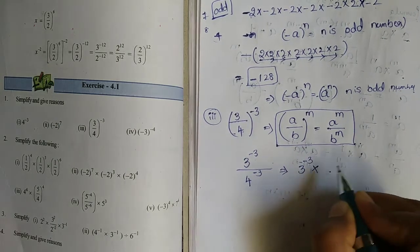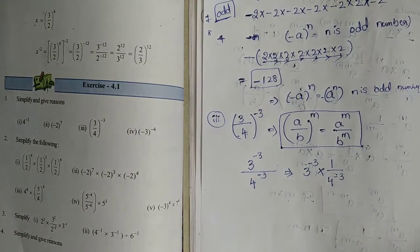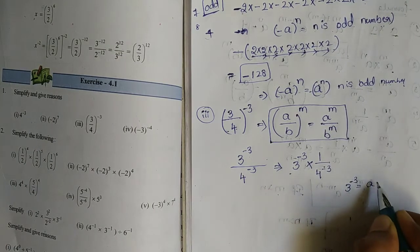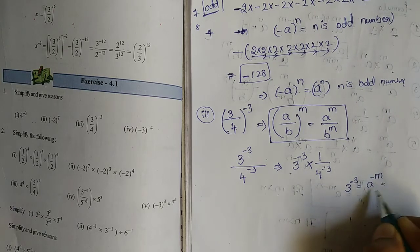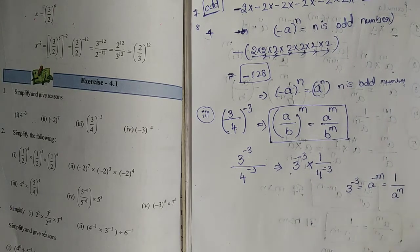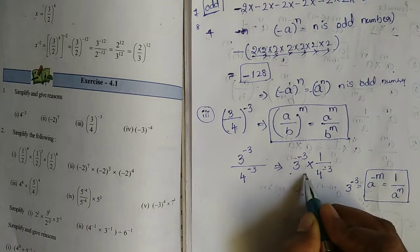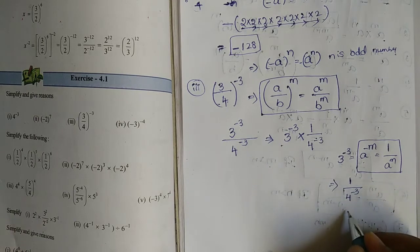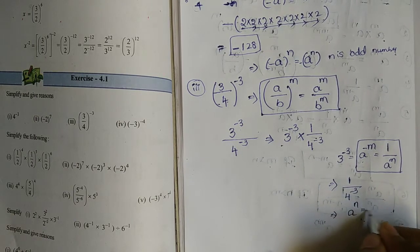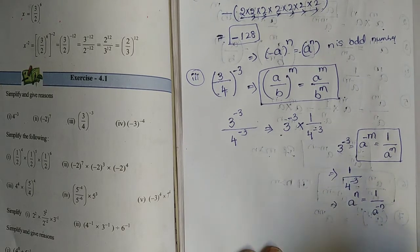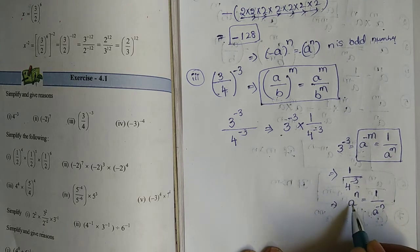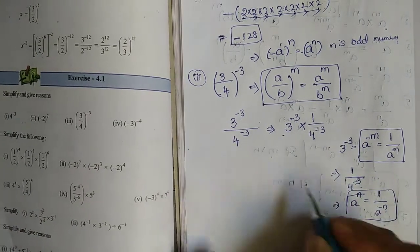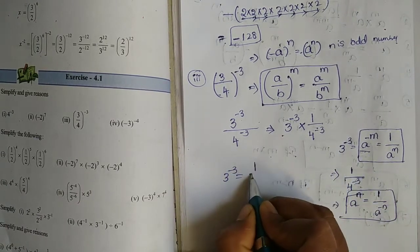Now, 3 to the power of minus 3 into 1 by 4 to the power of minus 3. Applying a to the power of minus m equals 1 by a to the power of m, we get 1 by 3 to the power of 3 for the numerator. And 1 by a to the power of minus n equals a to the power of n, so 1 by 4 to the power of minus 3 becomes 4 to the power of 3.